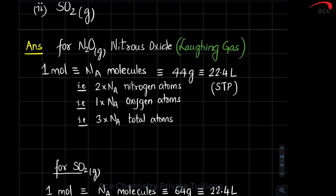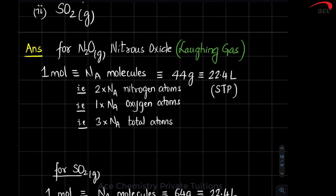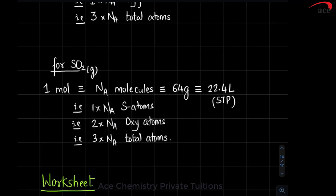For N2O (nitrous oxide), you can write down one mole is NA molecules. Atomicity for nitrogen is two, so multiply by two. For oxygen, atomicity is one, giving a total atomicity of three. Adding the weight of nitrogen and oxygen, its gram molecular mass will be 44. It is a gas, so it occupies 22.4 liters. For sulfur dioxide similarly, one mole is NA molecules, 64 gram molecular mass, and being a gas, it also occupies 22.4 liters. Atomicity of sulfur is one, oxygen is two, giving total atomicity of three.